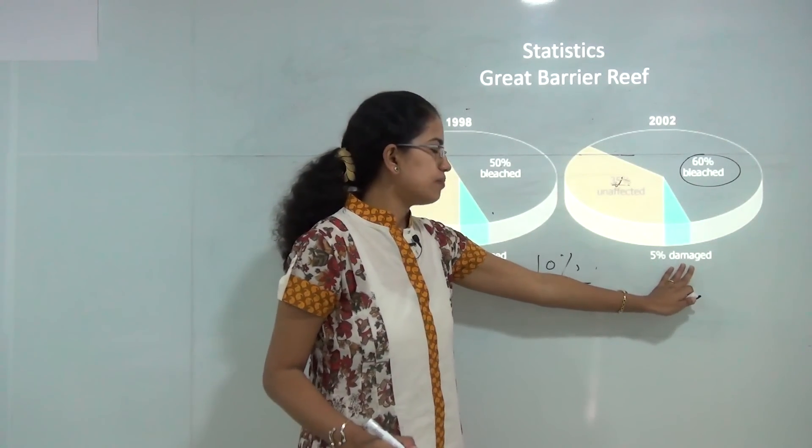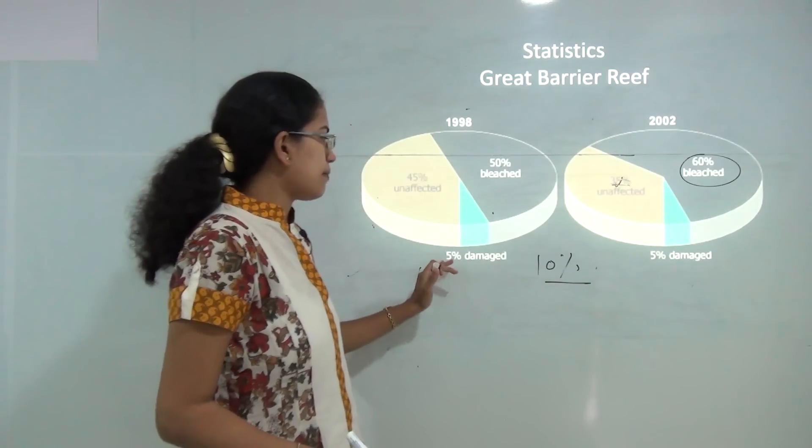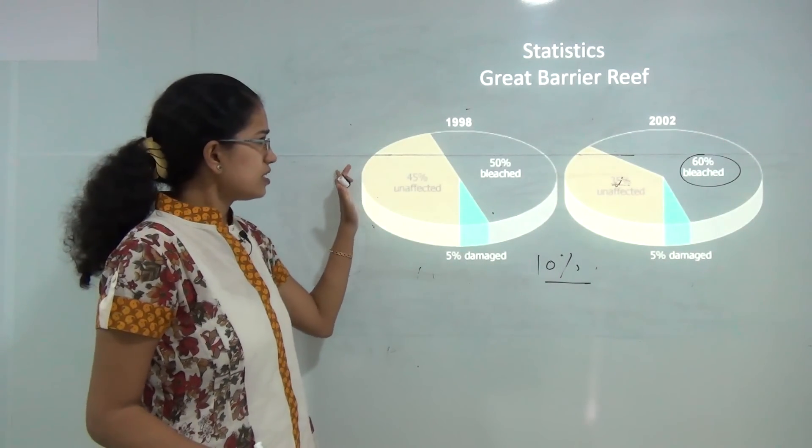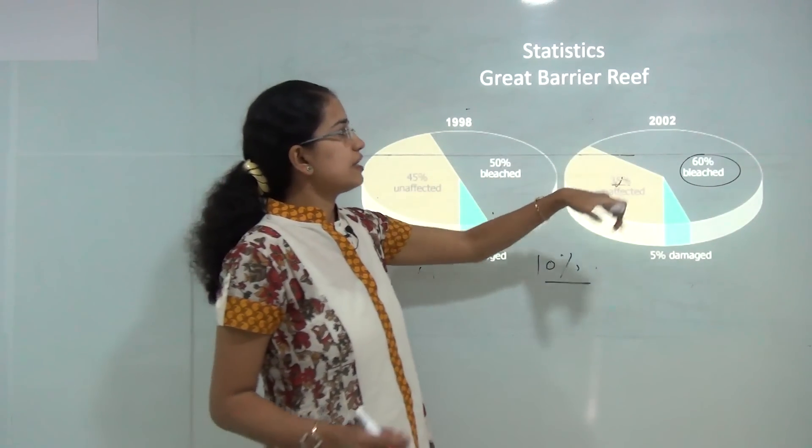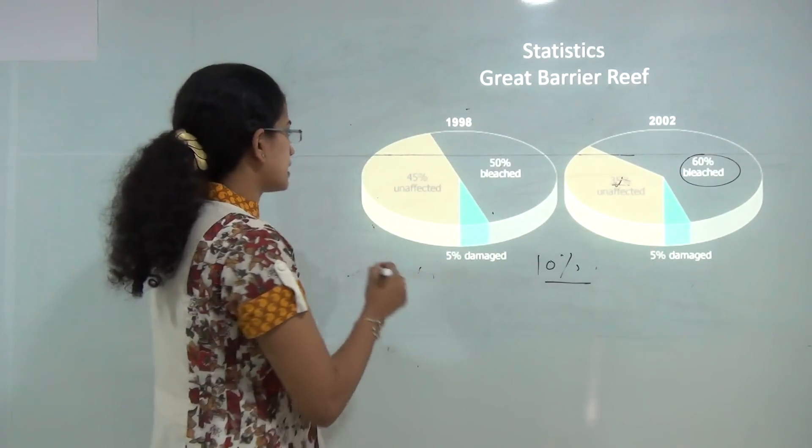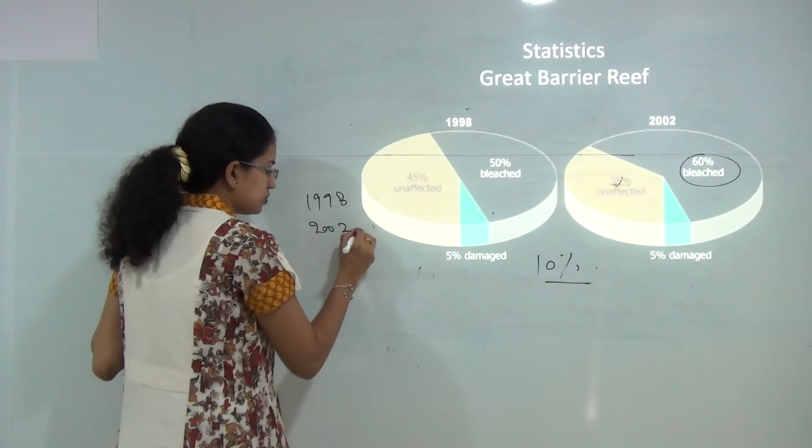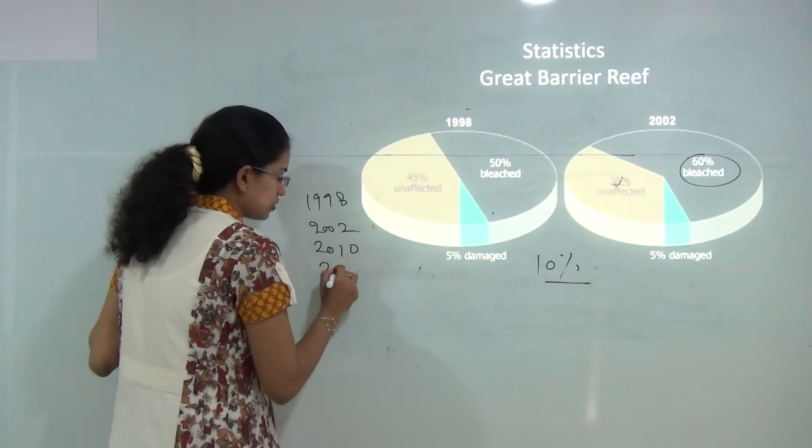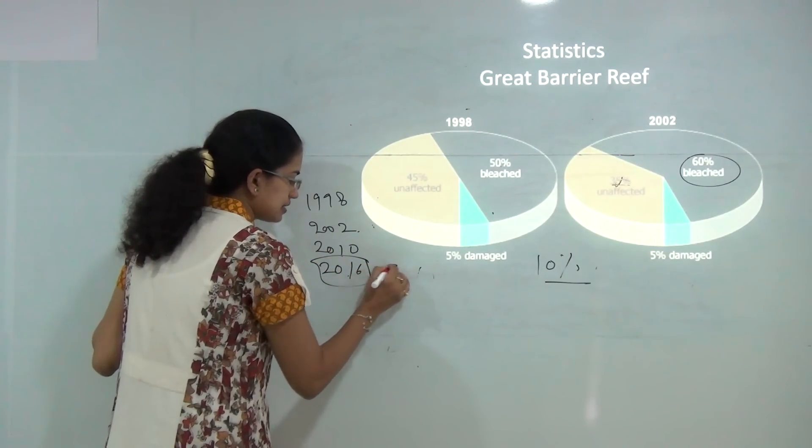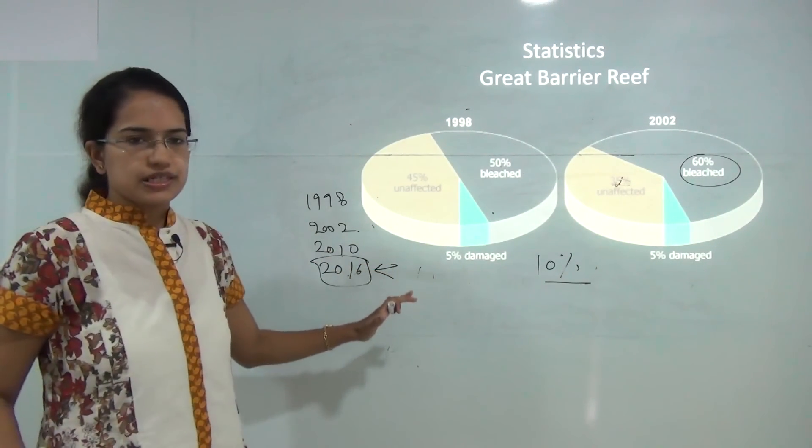However, the percentage of corals that were damaged remained same. There were episodic events that occurred in 1998 then 2002 then 2010 to 2016 is supposed to be highly susceptible for coral population here.